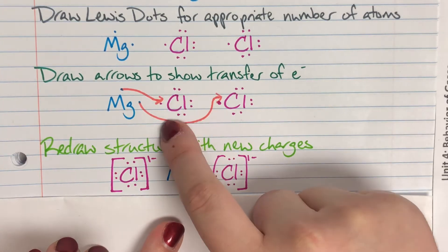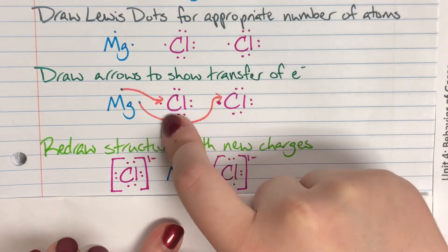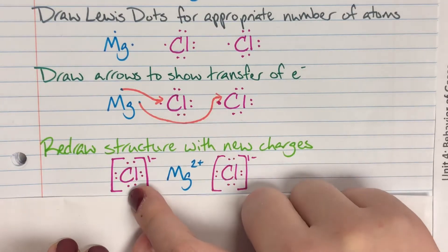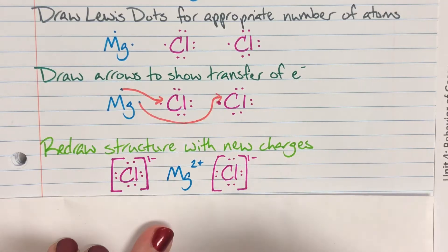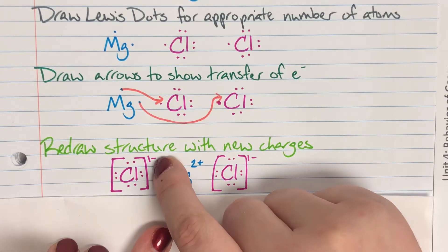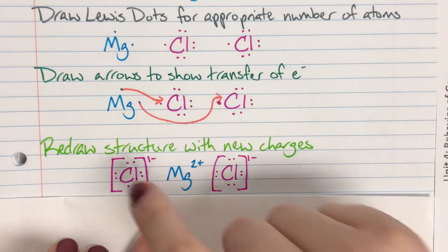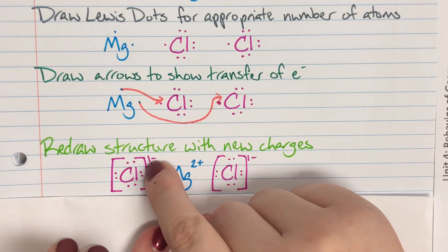Chlorine, on the other hand, now has eight, since it had seven and it stole one. That gets chlorine all the way up to eight, the perfect octet. But chlorine did steal one electron from magnesium, so we are going to denote that with a negative one charge.